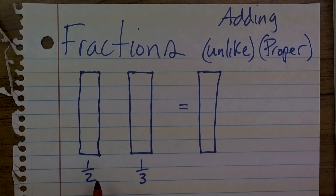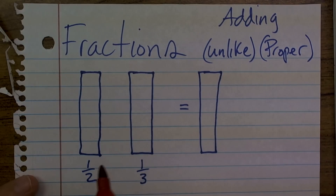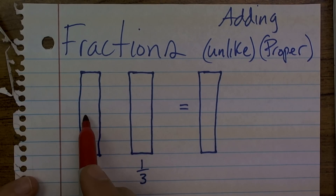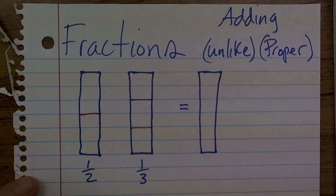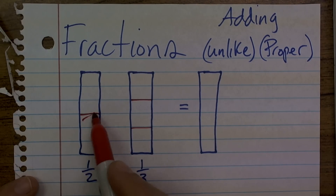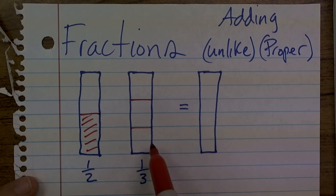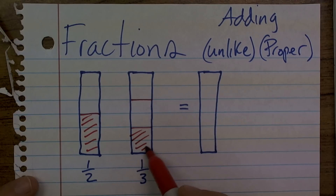So what I'm going to have is I want to add 1 half plus 1 third. First, we make sure that we separate our two bars into equal parts. My 1 half is divided into two different sections, and I'm going to select one of them. My 1 third is separated into three different parts, hence the denominator being three. And I'm going to select one part over there.